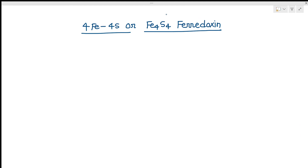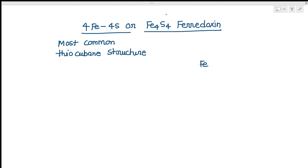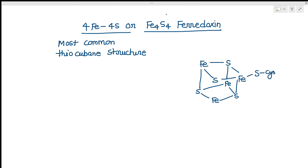The third type of ferredoxin is the 4Fe4S or Fe4S4 type. This is the most common type of ferredoxin and participates in several electron transfer reactions in bacteria. It has a thiocubane structure, where the iron atoms are present at alternate corners of a cube, with inorganic sulfur atoms at the remaining alternate corners. One sulfur atom of a cysteine residue is attached to each iron center.